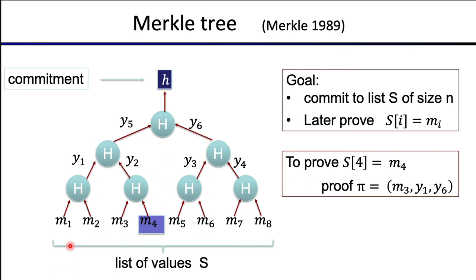The proof consists of the element m3, y1, and y6. You look at the path from m4 all the way to the root, and for each element along this path, you provide the sibling of that element. So for m4, we provide its sibling m3. For y2, we provide its sibling y1. For y5, we provide its sibling y6. The proof consists of these three elements.